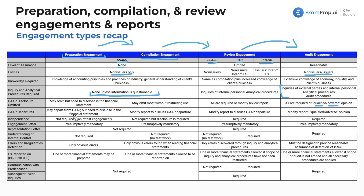For departures from GAAP: in preparations you may depart but must disclose it in the financial statements; in compilations you modify the report to discuss the departure; for reviews you similarly modify the report; for audits, if it's a reasonable departure taken for the benefit of readers it's acceptable — otherwise you issue a qualified or adverse opinion. Independence is not required for preparations as it's a non-attest engagement; for compilations it's not required but disclosure is required regardless of status; for reviews and audits independence is required because assurance is given.